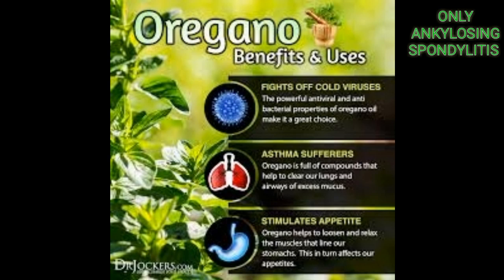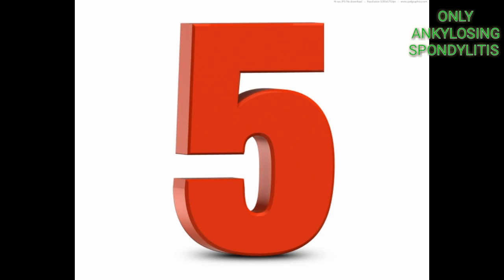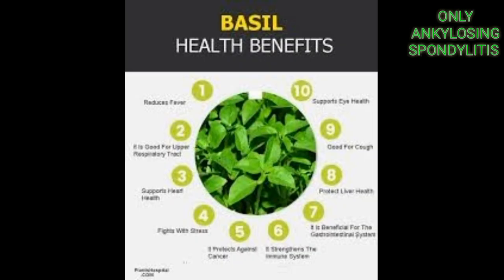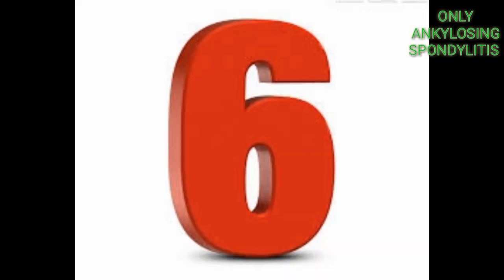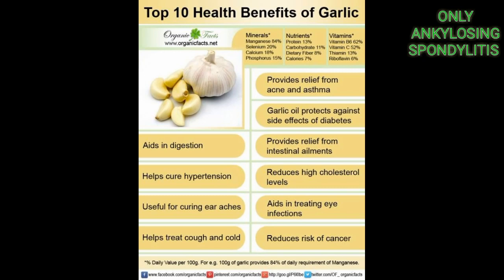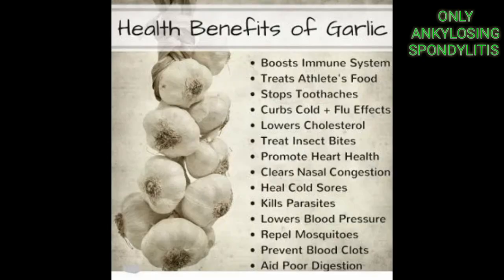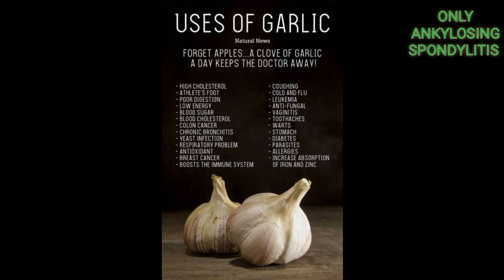The fewer free radicals you have, the less inflammation you will have. Basil: eugenol is the most well-known compound of basil with great anti-inflammatory properties. Eugenol also gives the distinctive taste and smell to this herb. Garlic: garlic has anti-inflammatory and antimicrobial properties due to several sulfur compounds it contains. Garlic also reduces the risk of heart attack and helps fight off cancer.